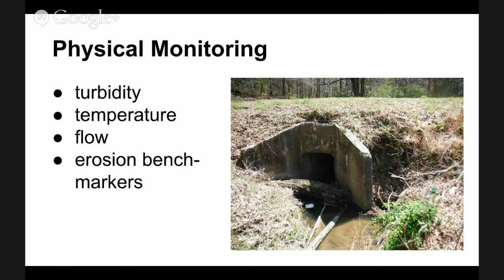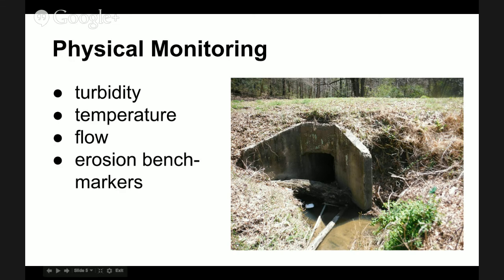We look at temperature a lot, since many organisms are pretty temperature sensitive, and algal blooms are more likely to happen at higher temperatures. We can also look at flow and erosion benchmarkers — like the width of the stream or river and the height of the riverbanks — to see if those change over time. This lets us catch and quantify erosion, because you have to be able to quantify everything if you're going to report it as a problem and tell people how fast it's happening.